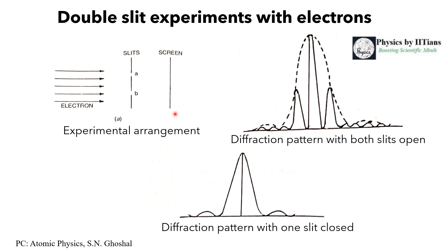Another question: what happens if you decrease the beam intensity? Even if we decrease the intensity of electrons to the limit where only one electron passes through the slit at a time, over a sufficient observation period we still see a diffraction pattern on the screen. This is amazingly quantum mechanical — even a single electron passing through a single slit produces a diffraction pattern over time, demonstrating the true nature of wave-particle duality, which is very important in quantum mechanics.